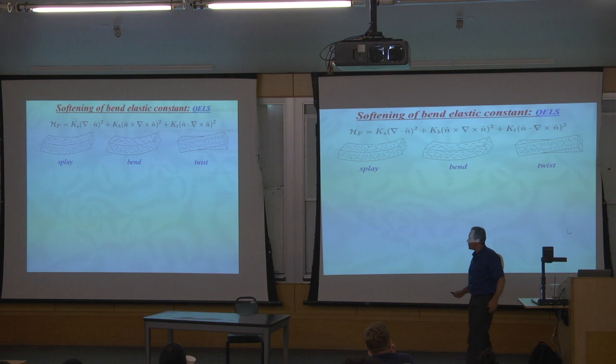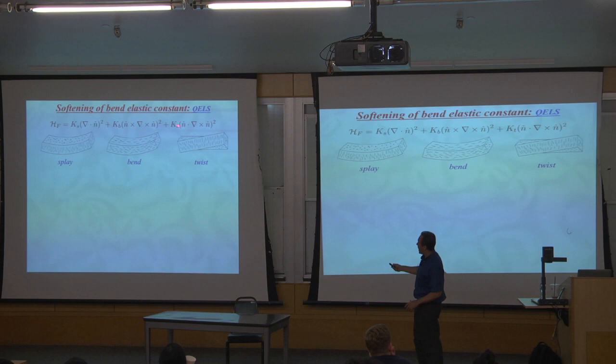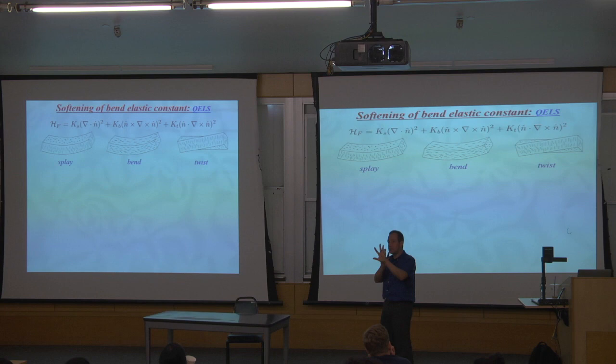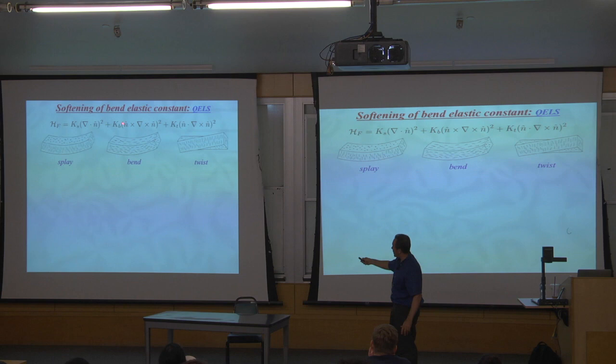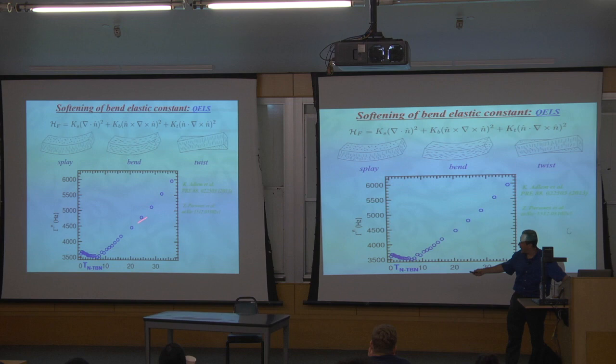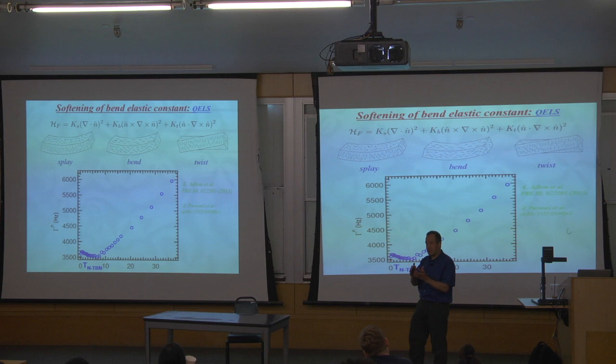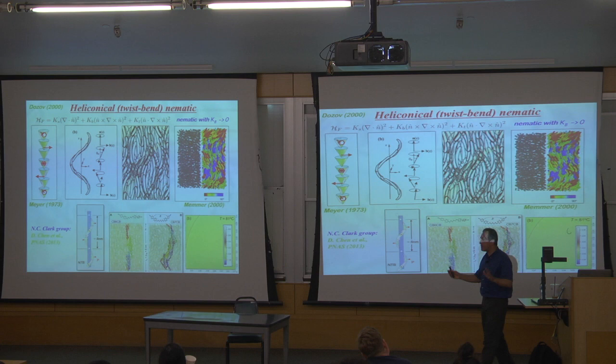The elasticity of a nematic is described by three elastic constants: the splay elastic constant, the bend elastic constant, and the twist elastic constant. What seems to be happening at this transition is that the bend elastic modulus is plummeting — not to zero, but becoming very small. That's an indicator that the system would like to twist: it becomes energetically cheaper and cheaper to twist as you enter that phase. It's kind of a precursor.